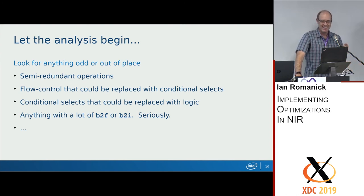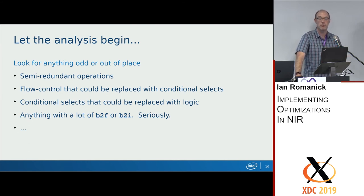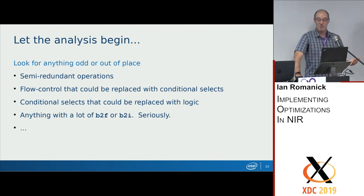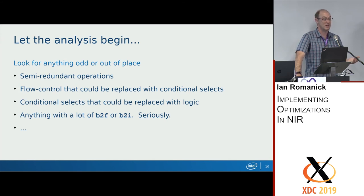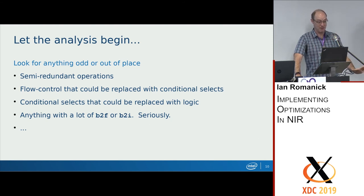A lot of these optimizations are either looking to take advantage of special instructions or rearranging things to make CSE more effective. I also look a lot for flow control that could become selects, or selects that could become different kinds of logic operations. Any time you see a lot of `b2f` or `b2i`, you're probably going to hit a gold mine. The HLSL compiler — the way it handles booleans, especially for older shader models but even shader model 5 — generates some really weird stuff. You'd just want to knock all of that off and just treat them as booleans.